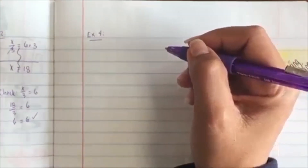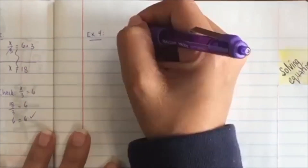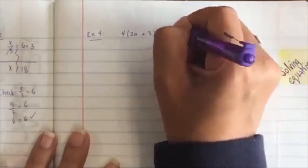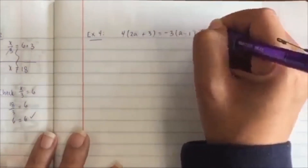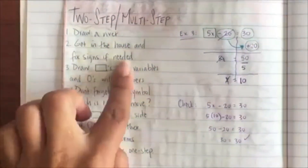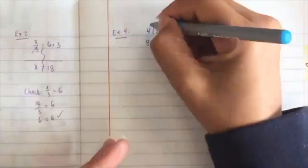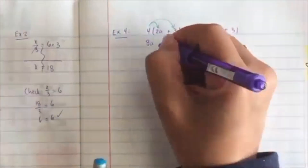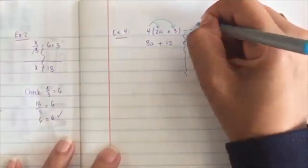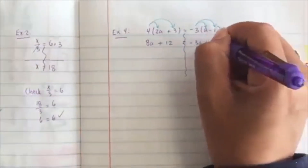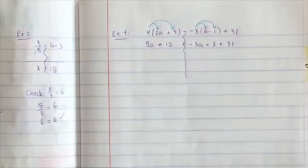Let's take a look at another example. If I have 4 times the quantity 2a plus 3, equal to negative 3 times the quantity a minus 1, plus 31. Draw a river. Step 2 says get in the house and fix the signs as needed — that just means distribute. So that's going to be 8a plus 12 equals — get that negative 3 in the house — negative 3a, and then negative 3 times negative 1 is going to be positive 3. And then plus 31.